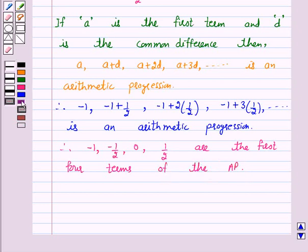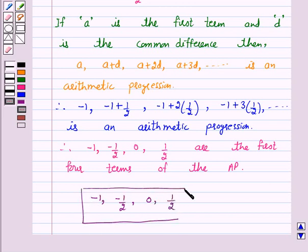Hence, the answer for the above question is -1, -1/2, 0, and 1/2 are the first four terms of the AP. I hope the solution is clear to you. Bye and take care.